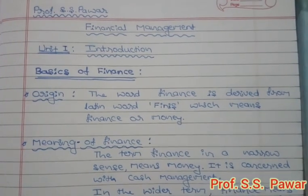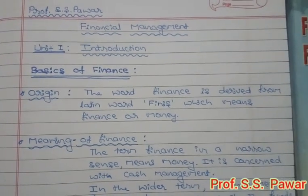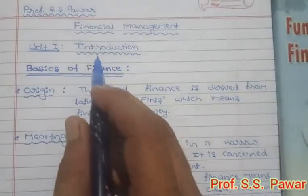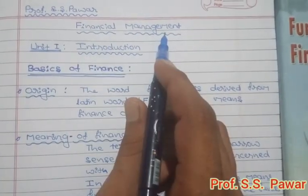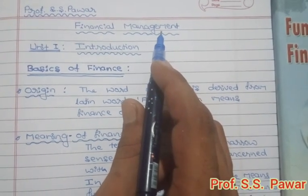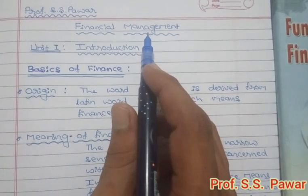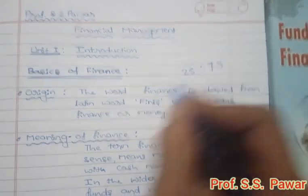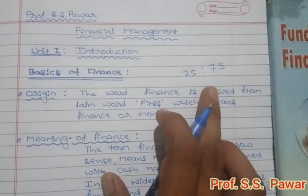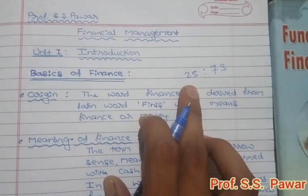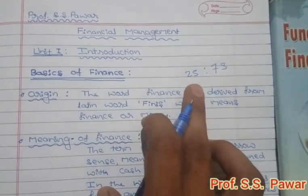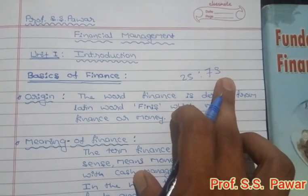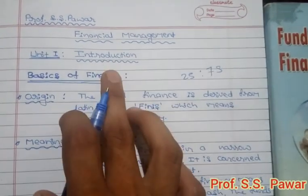Hi, this is Sachin. Dear students, you are heartily welcome to the fourth semester. For your fourth semester, I will handle the subject Financial Management. The pattern of Financial Management for your examination is 25 to 75 — that means this subject covers 25% theoretical concepts and 75% problematic concepts.